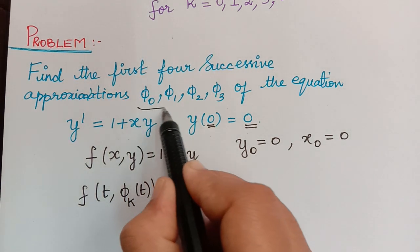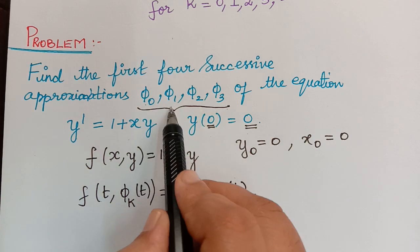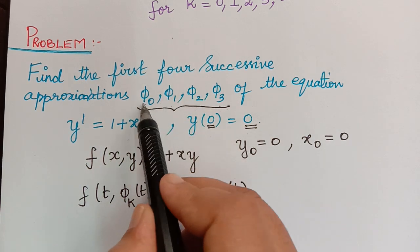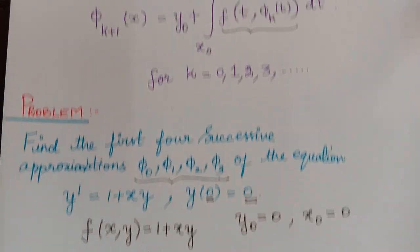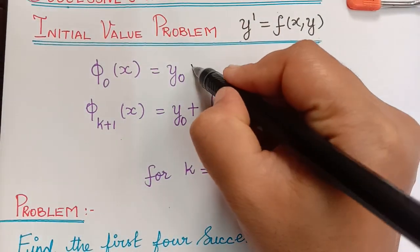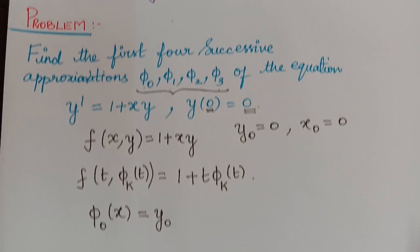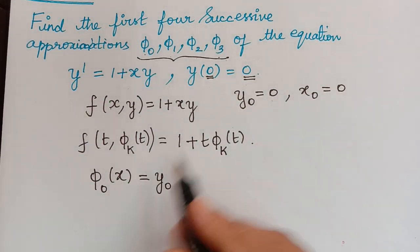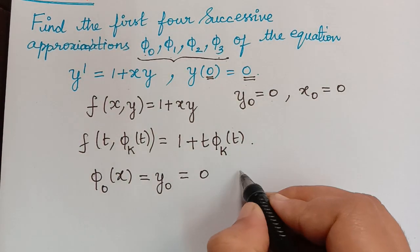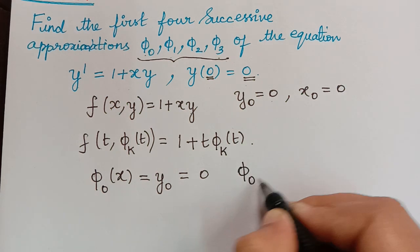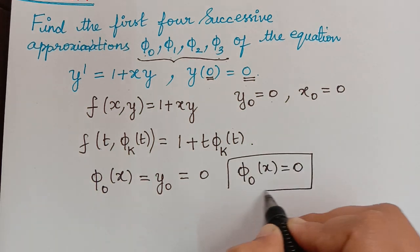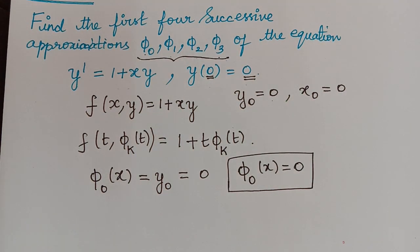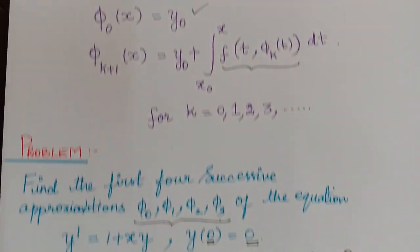We shall now find the approximations one by one. The question asks for φ₀, φ₁, φ₂, φ₃. The first approximation φ₀(x) = y₀ by definition. Since y₀ = 0, therefore φ₀(x) = 0. This is our first approximation.